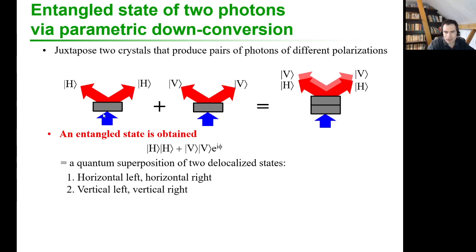You can produce a pair of photons. So let's say we make a crystal that produces two horizontal photons like this, and then we make another crystal which produces two vertical photons from a similar laser beam, from a similar pump.